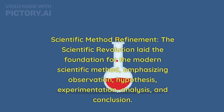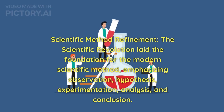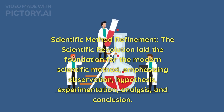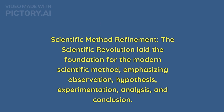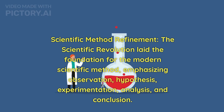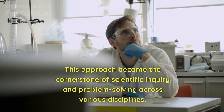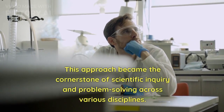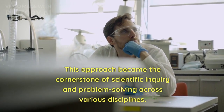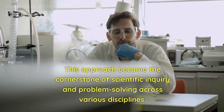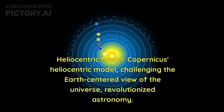The scientific revolution laid the foundation for the modern scientific method, emphasizing observation, hypothesis, experimentation, analysis, and conclusion. This approach became the cornerstone of scientific inquiry and problem solving across various disciplines.